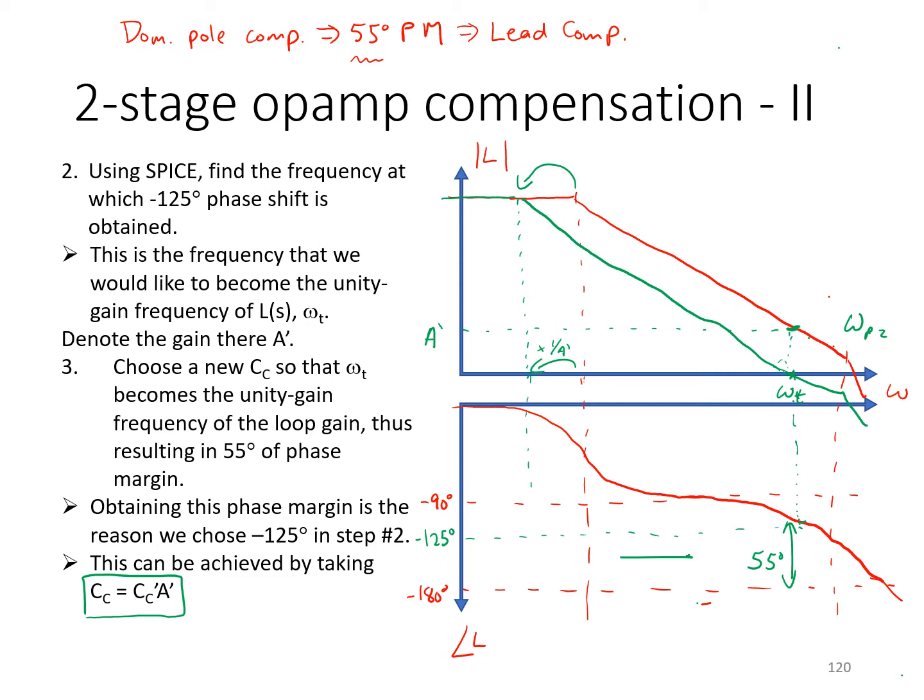So, the resulting phase response would look like this. The dominant pole would be shifted down, but that wouldn't have much effect on the phase margin, since in any case, the dominant pole was already contributing 90 degrees phase shift out here. So, we just shifted over omega_t to the left without changing the phase response. So, now we've got our desired 55 degrees phase margin after dominant pole compensation.